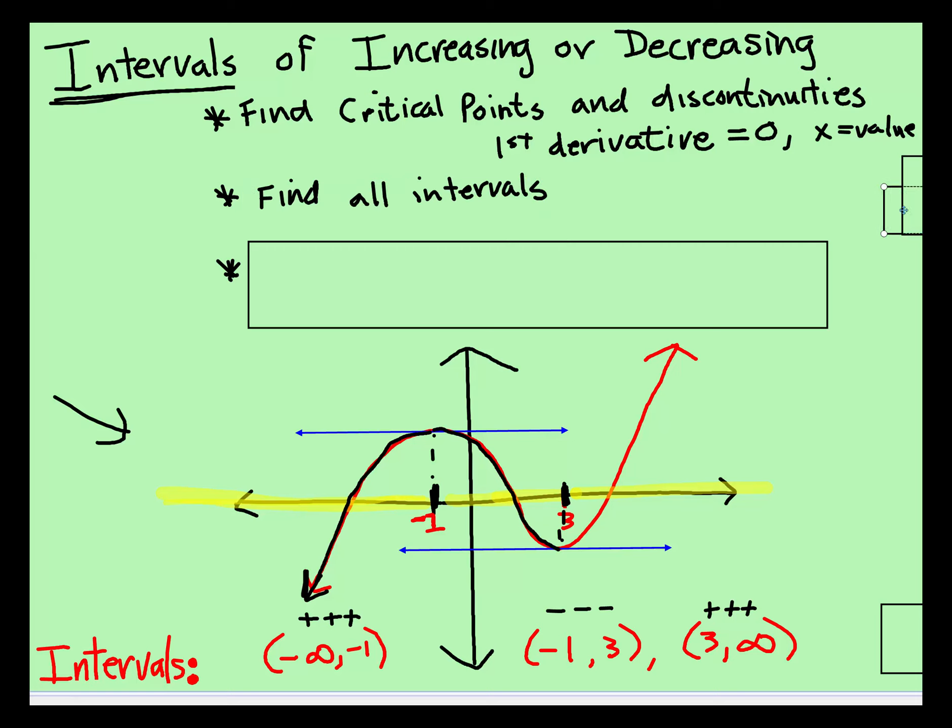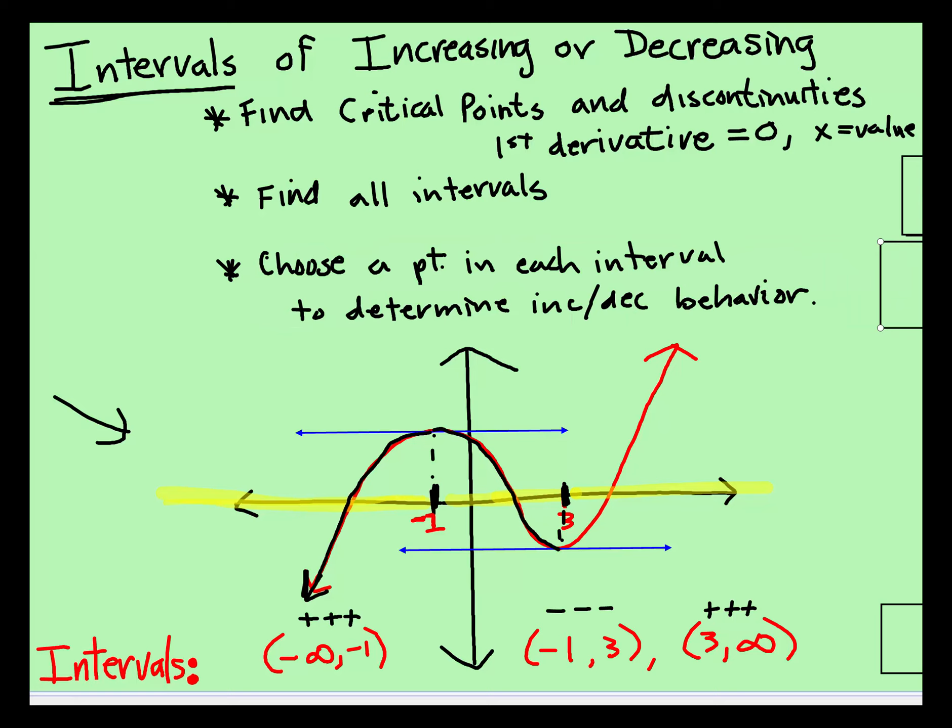You're going to name all the intervals and then you're going to choose a point. Because you're not always going to have what the graph looks like, that's easy. You're just going to be given information. You have to figure out what the graph looks like. So, when you name all the intervals like I did here.